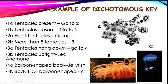We omit this and proceed to 2B: more than 8 tentacles. For organism B, tentacles are present — go to 2. Since 2A is already found (octopus), we go to 2B: more than 8 tentacles? Yes, we cannot count them all. Go to 3. Then 3A: tentacles hang down? No, they are not hanging down. 3B: tentacles upright? Yes, they are upright. So organism B is identified.